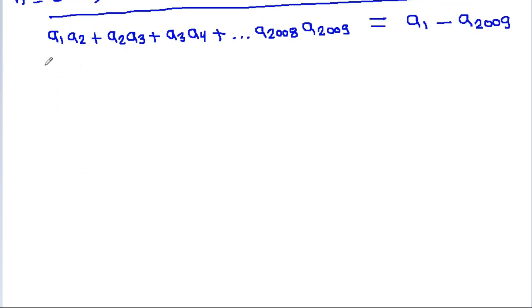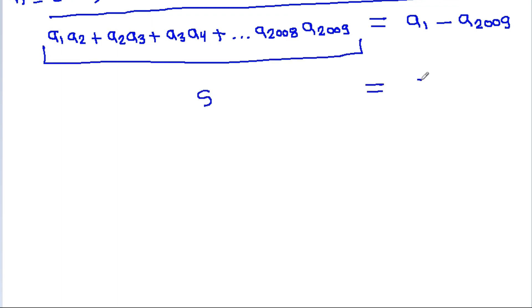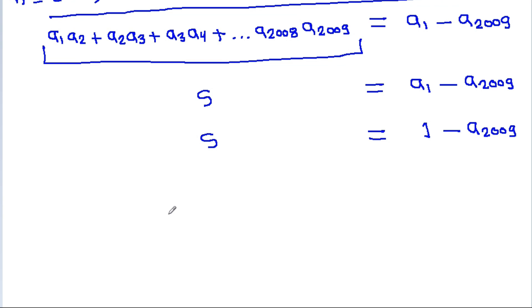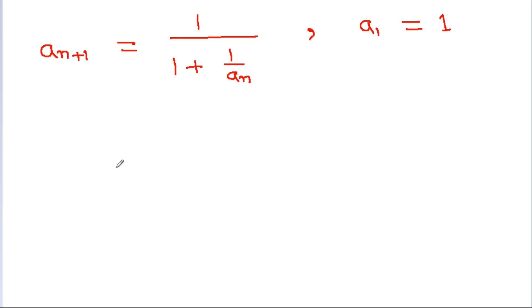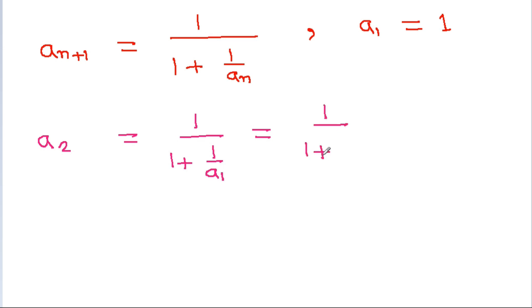Suppose this sum S is equal to a_1 minus a_{2009}. So S will be equal to a_1, which is given as 1, minus a_{2009}. We have a_{n+1} equal to 1/(1 + 1/a_n) and a_1 equal to 1. So a_2 will be equal to 1/(1 + 1/a_1) and since 1/a_1 equals 1, it is 1/2.